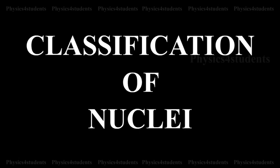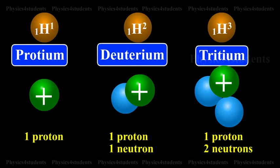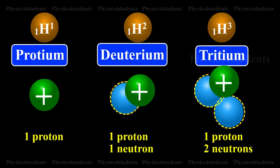Classification of nuclei. Isotopes: Isotopes are atoms of the same element having the same atomic number Z but different mass number A. The nuclei 1H1, 1H2, and 1H3 are the isotopes of hydrogen. In other words, isotopes of an element contain the same number of protons but different number of neutrons.